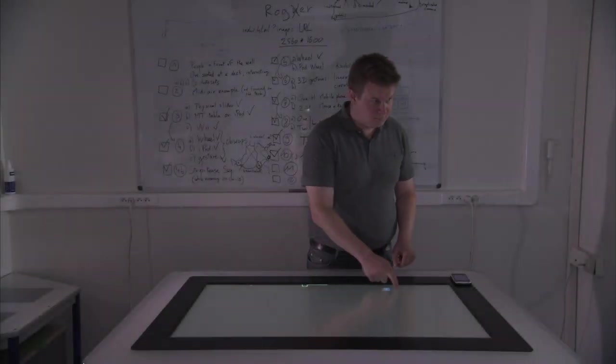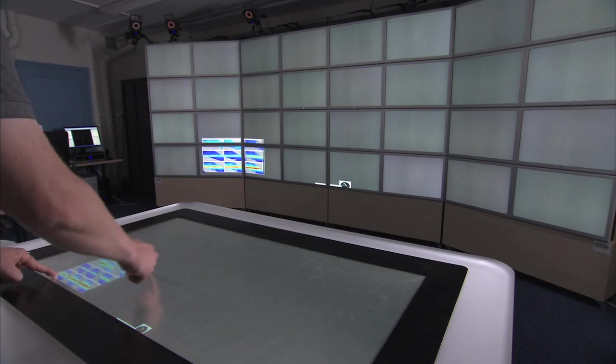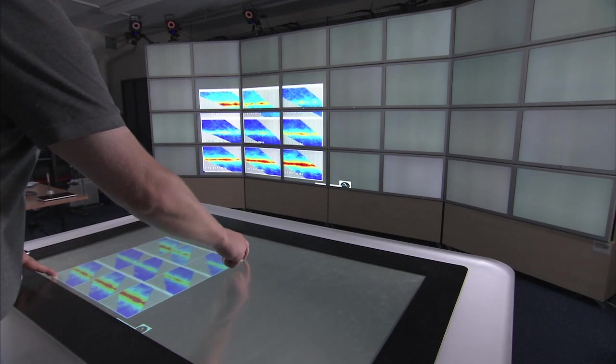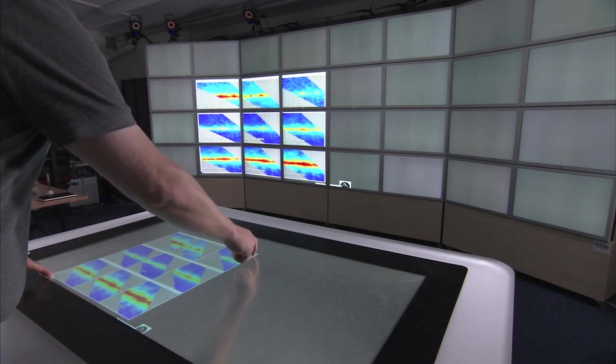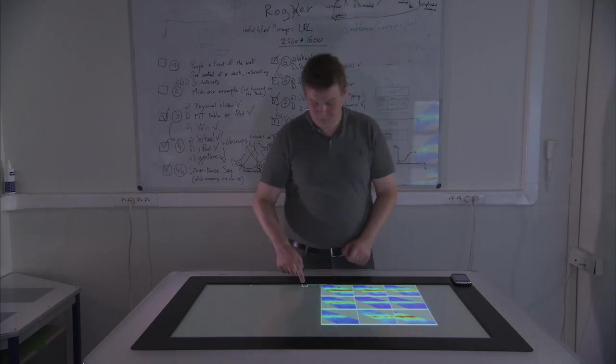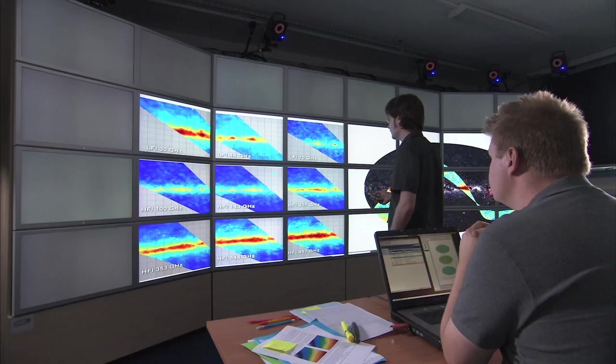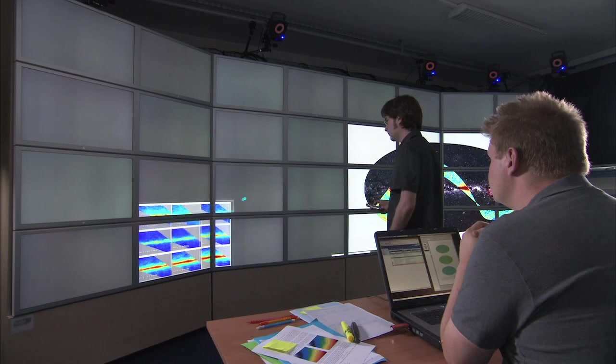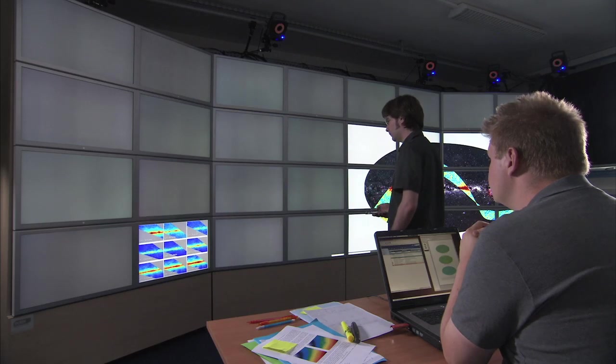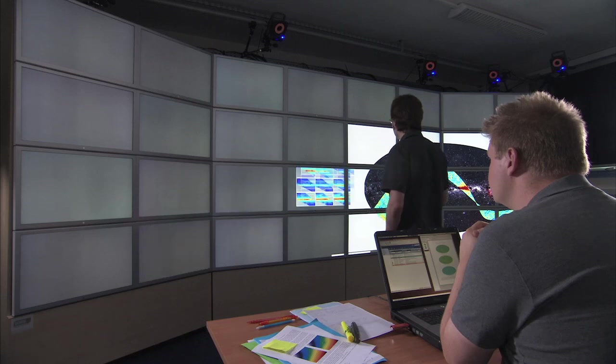A third common requirement is to combine data and documents from multiple sources in order to look at a phenomenon from different perspectives. Here, one researcher uses the table to organize telescope imagery on the wall. Another researcher uses a smartphone, whose position is tracked, to move and resize images, documents, and websites on the wall display.